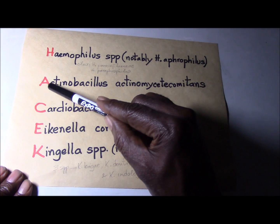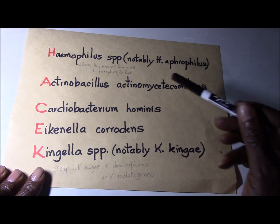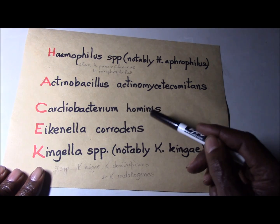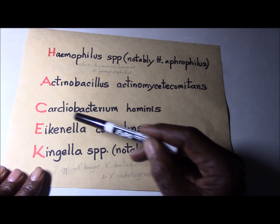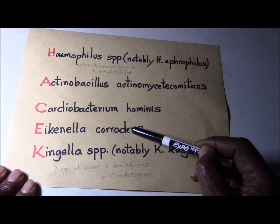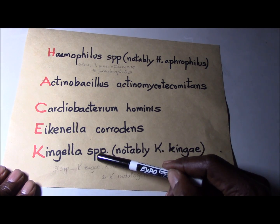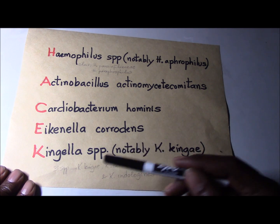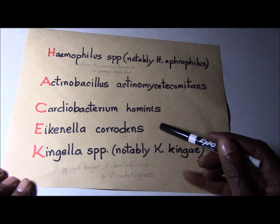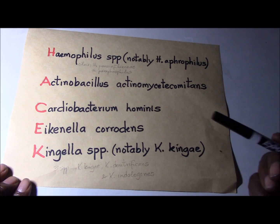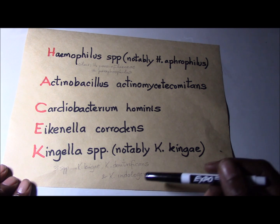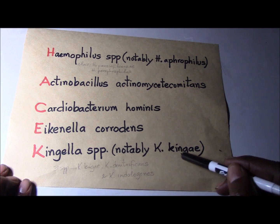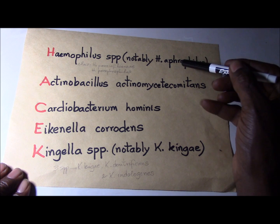The A stands for Actinobacillus actinomycetemcomitans. The C stands for Cardiobacterium hominis. The E stands for Eikenella corrodens. And the K stands for Kingella species, notably Kingella kingae. There are three species of Kingella of clinical importance: Kingella kingae, Kingella denitrificans, and Kingella indologenes.